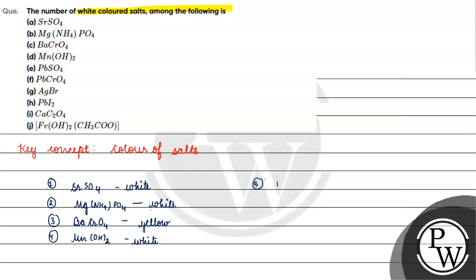Then we have lead sulfate, PbSO4, it is white in color. Then we have lead chromate, PbCrO4, it is yellow in color.